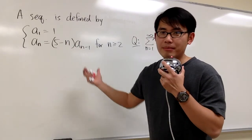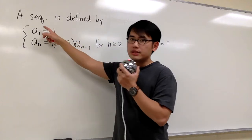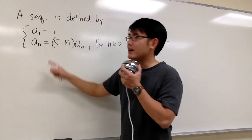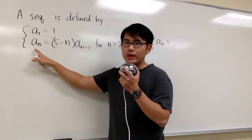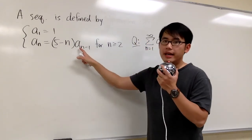Alright, this question is slightly more different, but that's what makes this question more fun as well. Let's take a look. We are given a sequence defined with this recursive formula. a₁ is equal to 1, and then anything after that, we have aₙ equals 5 minus n, and then we multiply by aₙ₋₁.